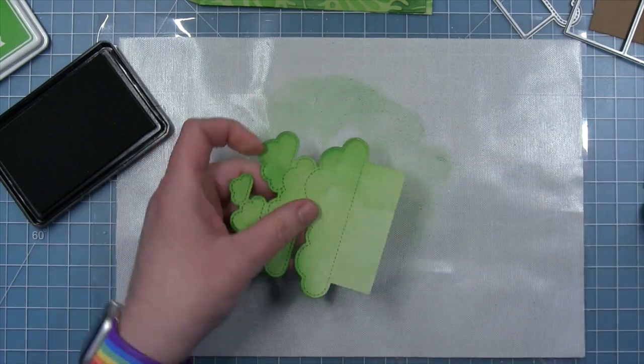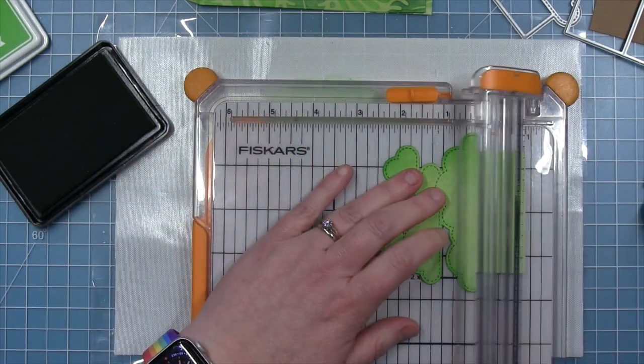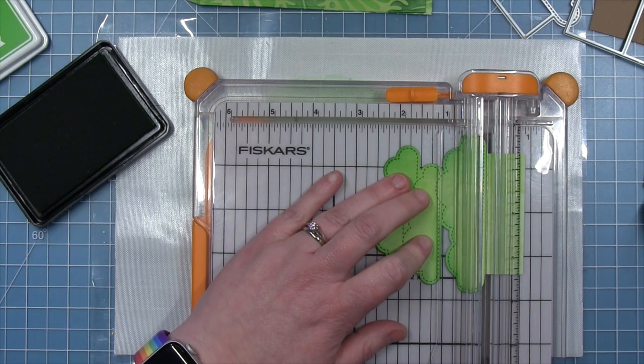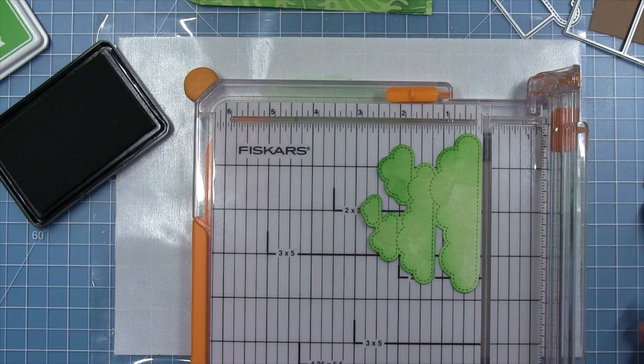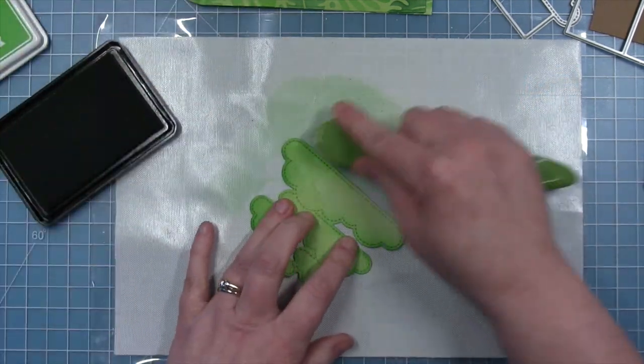And then I'm actually going to take my paper trimmer and cut off that rectangle at the bottom, where it usually gets inserted into the platform pop-up, because I'm going to be inserting it a little bit different.